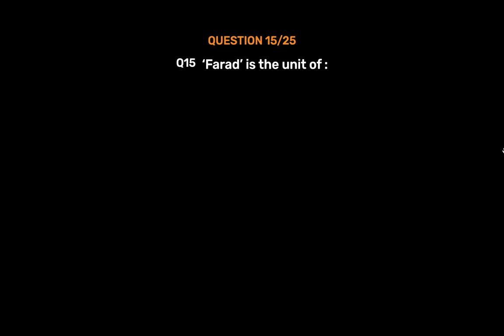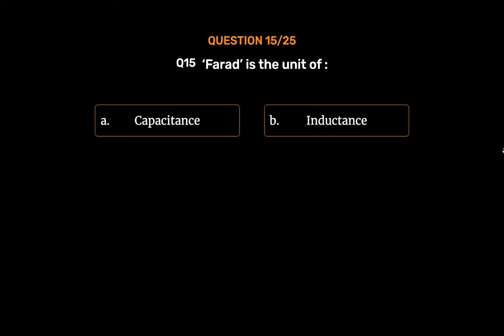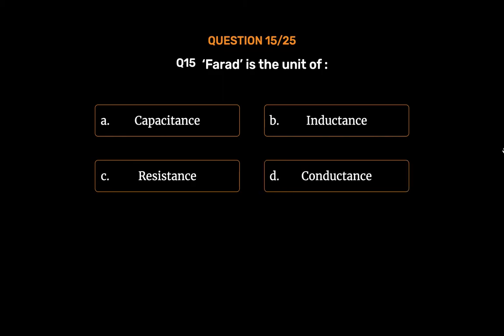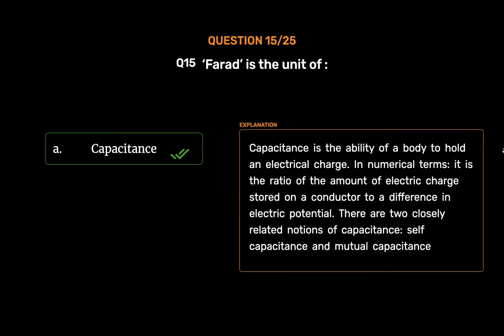Question No. 15. Farad is the unit of: Option A. Capacitance. Option B. Inductance. Option C. Resistance. Option D. Conductance. The correct answer is Option A, Capacitance. Capacitance is the ability of a body to hold an electrical charge. In numerical terms, it is the ratio of the amount of electric charge stored on a conductor to a difference in electric potential. There are two closely related notions of capacitance: self-capacitance and mutual capacitance.